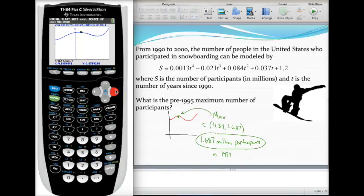Move to the right of the high point over here and press enter, and then for guess just go ahead and hit enter. The calculator will find the highest point between there. I found here, what this means is, if they want the maximum number of participants that's my y value, so about 1.687 million participants. If they ask for when that occurred, it occurred about four years after 1990 so about 1994.